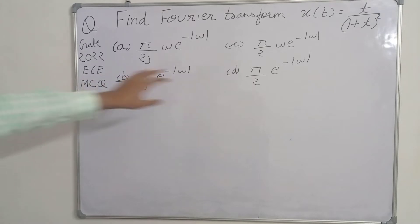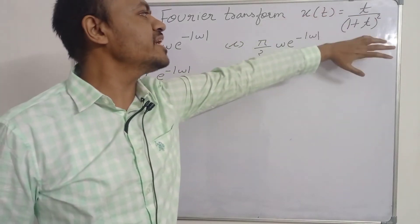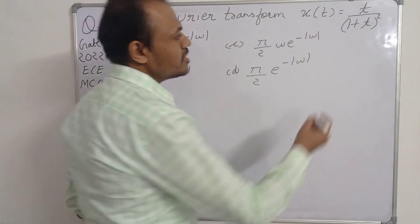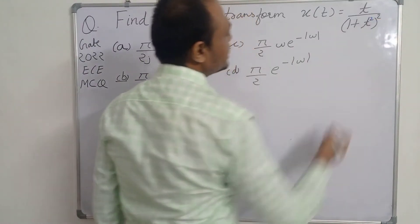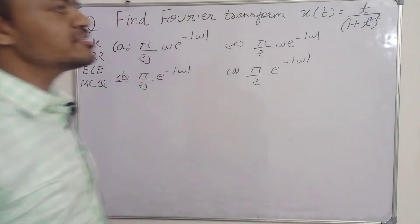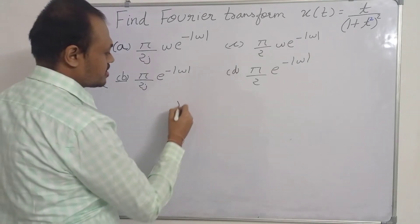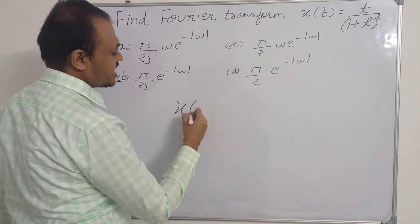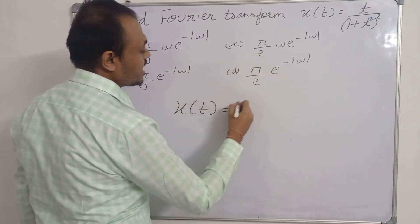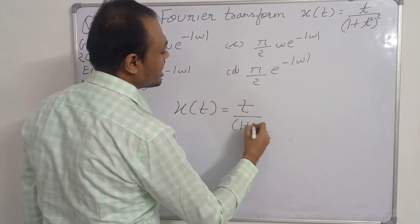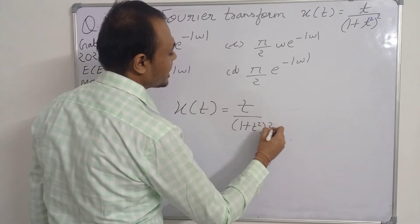We are given the signal x(t) = t / (1 + t²)², and we have to find its Fourier transform.